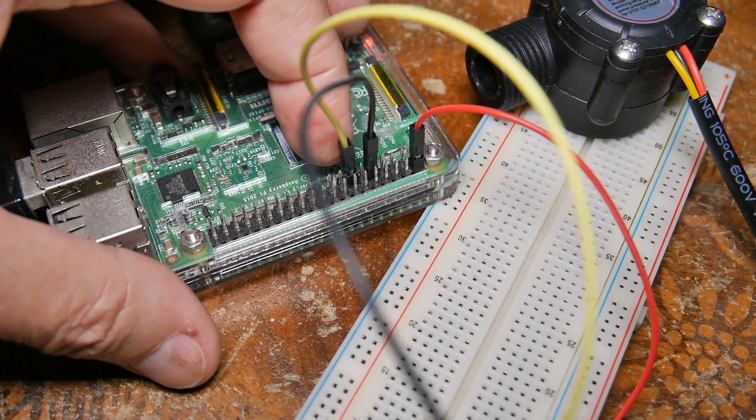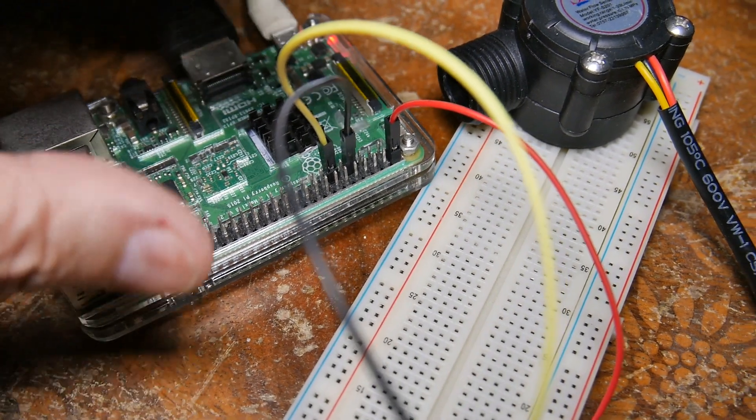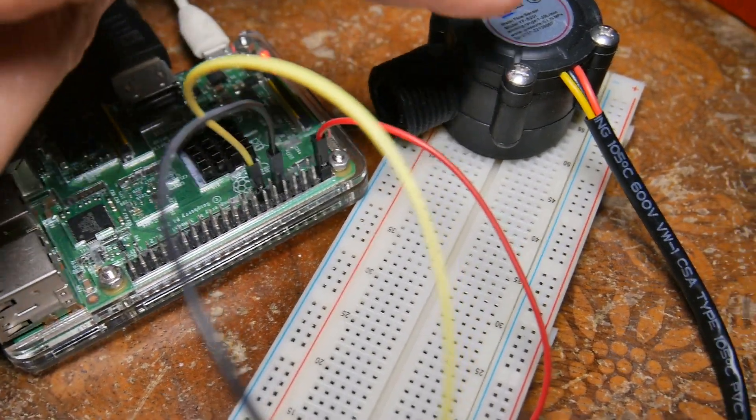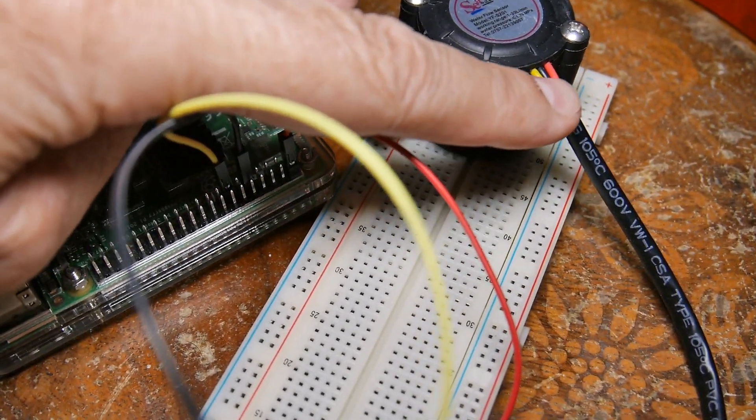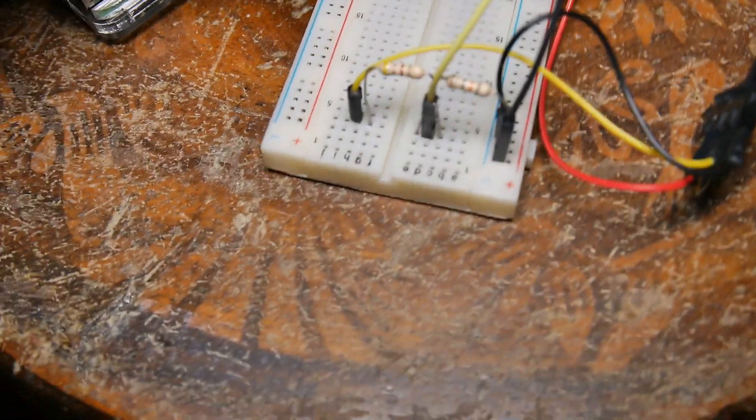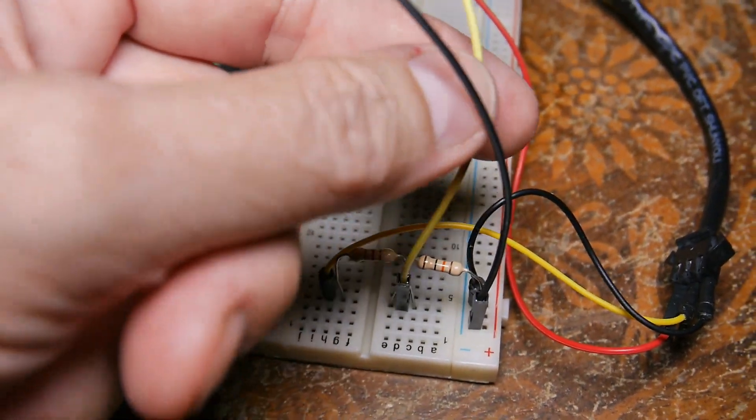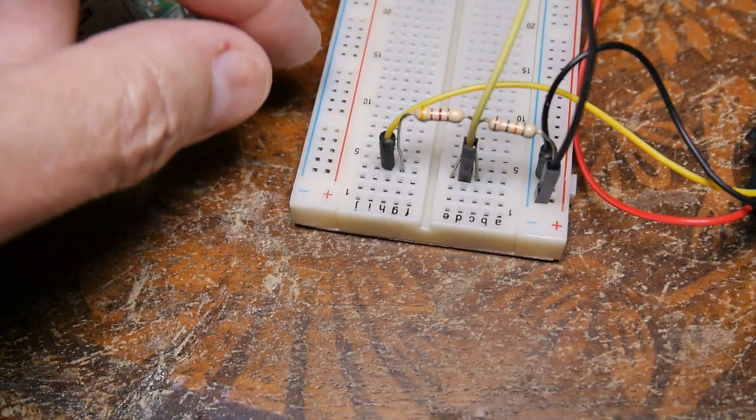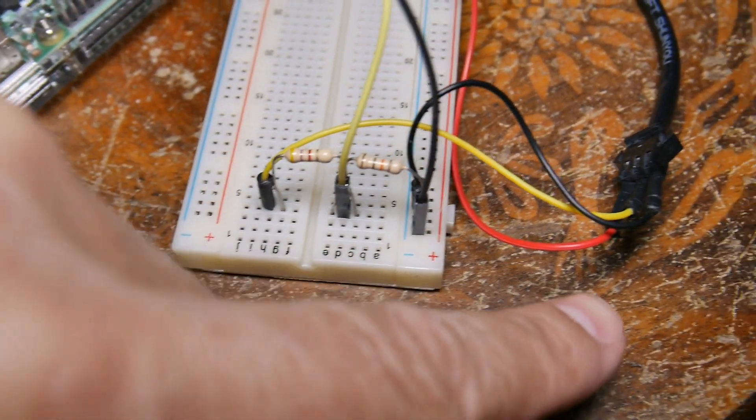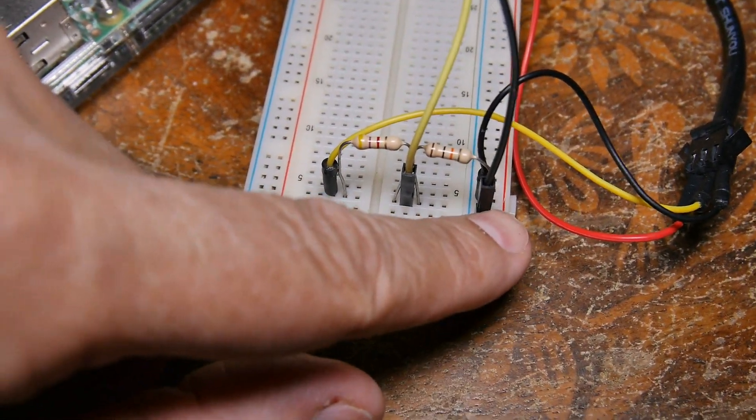This is pin 13, our input back from the meter, it's the yellow wire. I use the same color coding as the meter uses: red, black, yellow. Then we follow our wires over to our voltage divider. This wire goes back to Pi pin 13, this wire goes to the plug on the meter, and this is the ground.